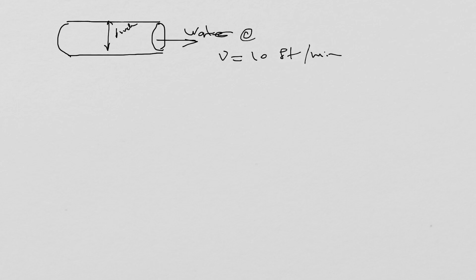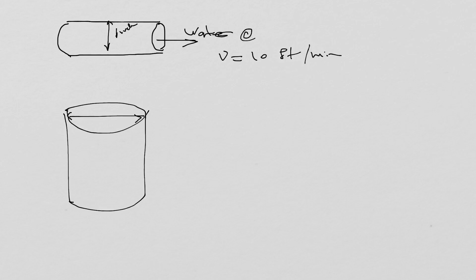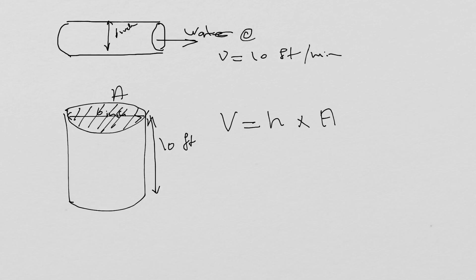I'm going to simplify the problem by looking at the pipe as a cylinder. So we have a cylinder here, the diameter of the cylinder is six inches, and let's say the height is ten feet. The volume of the cylinder is the height of the cylinder times the area of the circle, or the cross-section of the cylinder, which is A.